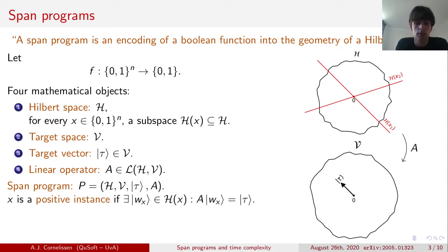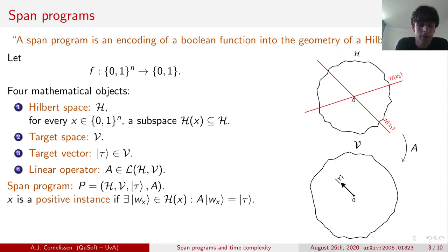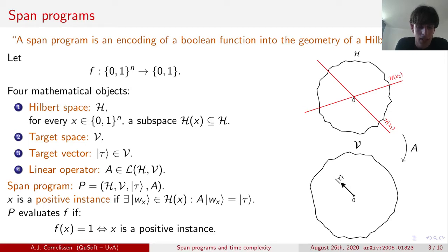Now we can ask the following question: given some element in the domain of f, can we find a vector in its associated subspace H_x that by A gets mapped to the target vector? In other words, can we reach the target vector from its associated subspace H_x? If this is the case, then we say that x is a positive instance. And if this is not the case, then we say that x is a negative instance. We say that the span program p evaluates a boolean function f if f(x) = 1 is equivalent to saying that x is a positive instance. So in this way, we can see that indeed we have encoded f into the geometry of our Hilbert space.